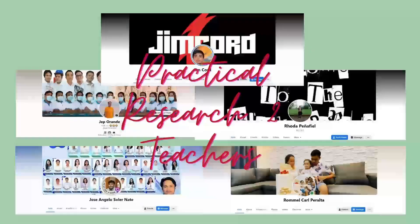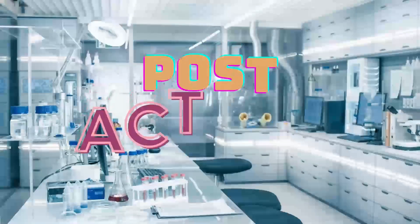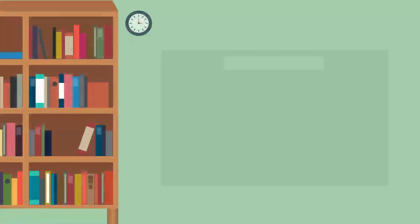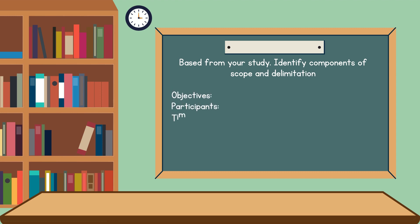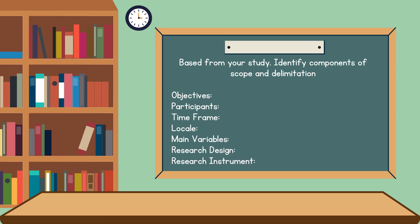For clarifications, feel free to contact your Practical Research 2 teachers. Based on your study, identify the components of scope and delimitation — identify the objectives, participants, time frame, locale, main variables, research design, and research instrument. Let me know in the comment section down below.